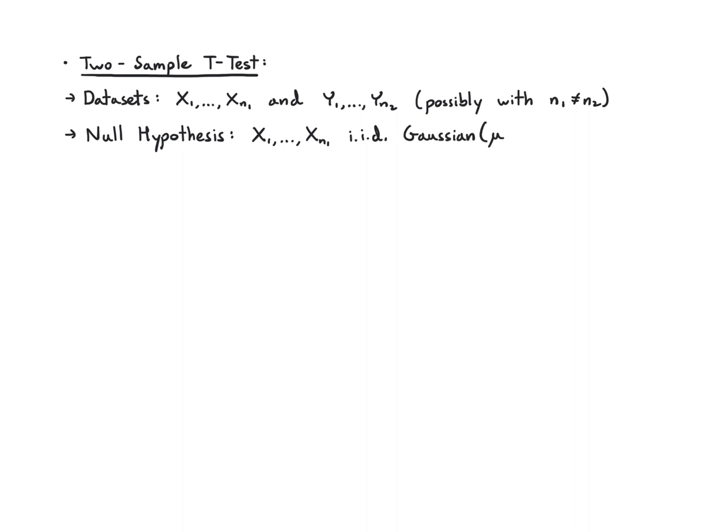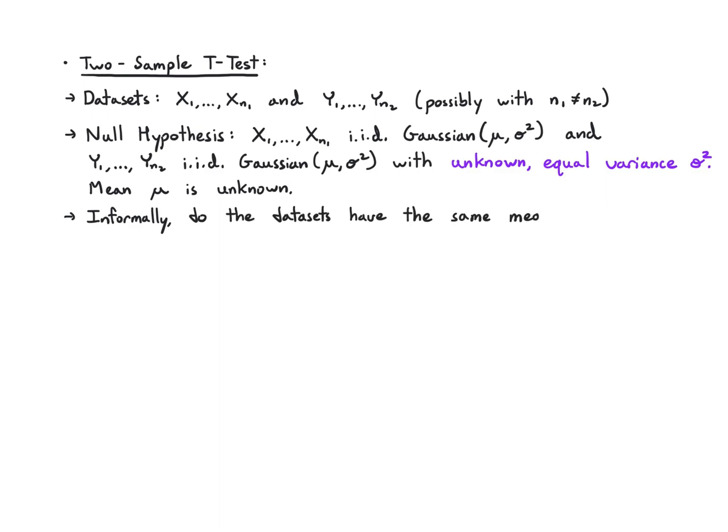Finally, let's talk about the two-sample t-test. The two-sample t-test has the same data setup as before. Two datasets, possibly of different sizes. The null hypothesis is going to be almost the same, except on the null here we're going to say they have the same mean and the same variance. Now sigma squared is the same for both. We don't know sigma squared because it's a t-test, but it's equal across the datasets. The mean, again, is unknown. What we're asking informally is, do the datasets have the same mean? Formally, we're just asking whether to reject the null.